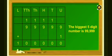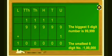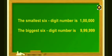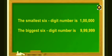It means if we add 1 to the biggest 5-digit number, we get the smallest 6-digit number, that is 1 lakh. Thus, the smallest 6-digit number is 1 lakh and the biggest 6-digit number is 9,99,999.